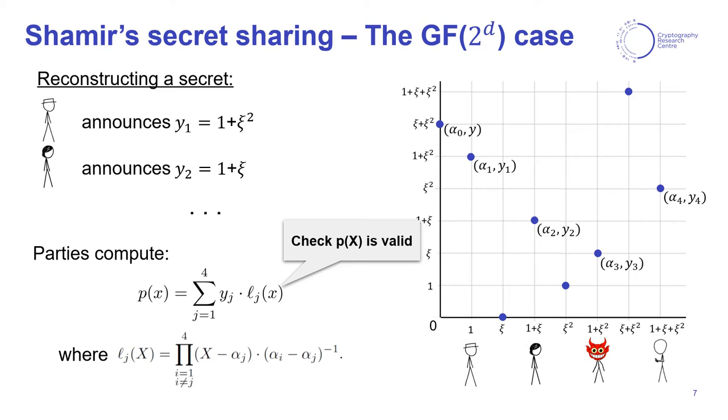And something that is very important here to note is that in order to do this interpolation, parties need to compute the inverse of the differences between their public values αᵢ. And this works perfectly fine when you are in a finite field, but we will see that this is more complicated in more general rings.